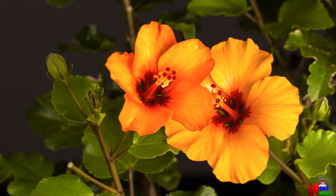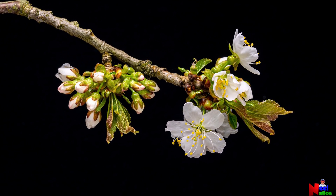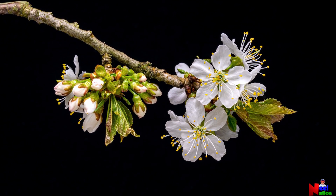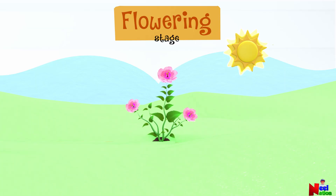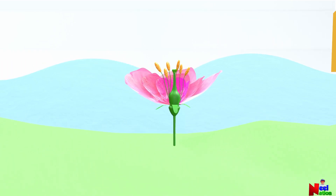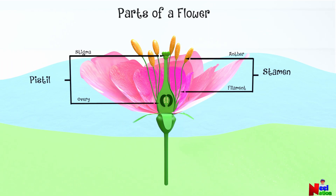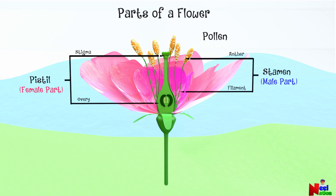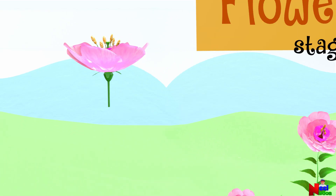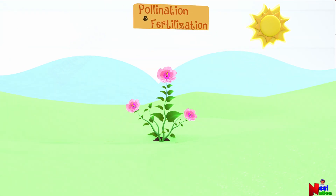The flowering stage marks the beginning of reproductive growth in plants. Flowers have special parts that ensure the plant can have baby plants. Let's have a look inside a flower. The parts that help in reproduction are the stamen and the pistil. The stamen is the male part of the plant, and the pistil is the female part. The stamen has tiny specks of dust called pollen, and the pistil has the special ability to make seeds inside its ovary. In the ovary there are tiny eggs called ovules. These parts work together in a process called pollination and fertilization, which leads to the formation of seeds and the continuation of the plant's life cycle.